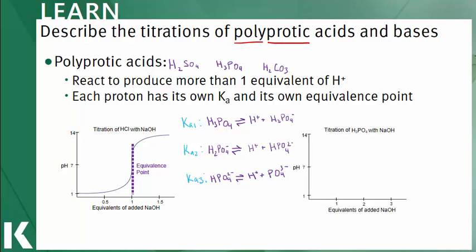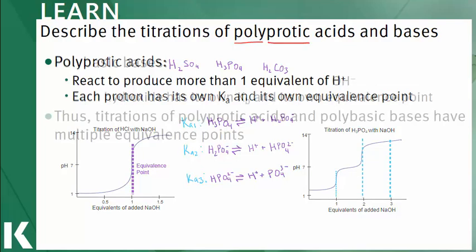The titration curve of the phosphoric acid would look like this, starting at an acidic pH and increasing in basicity as equivalents of a strong base are added. Each of the equivalence points can be seen at 1, 2, and 3 equivalents of a strong base.